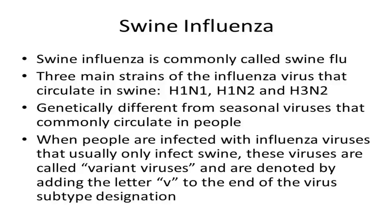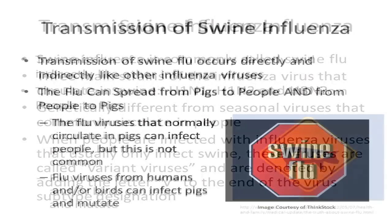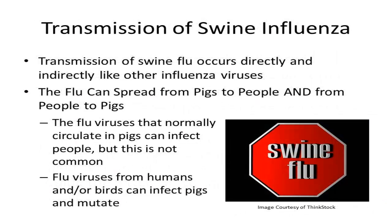When this happens, these viruses are called variant viruses, which is denoted by adding the letter V to the end of the virus subtype designation. Like human and avian influenza viruses, swine influenza virus transmission can occur through direct contact with secretions or indirect contact with fomites. It is important to realize that the flu can spread from pigs to people and from people to pigs, but this is not common.